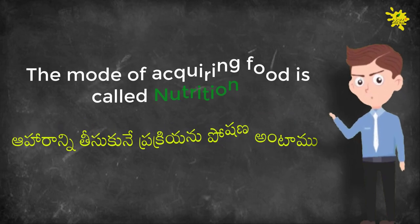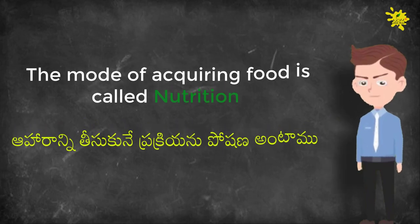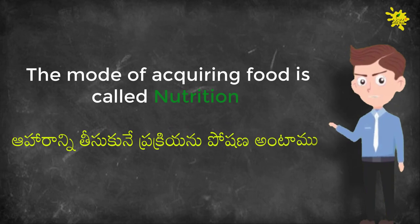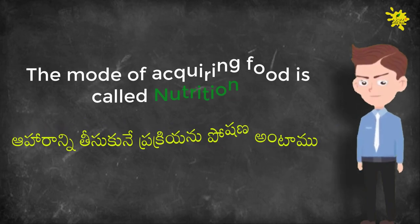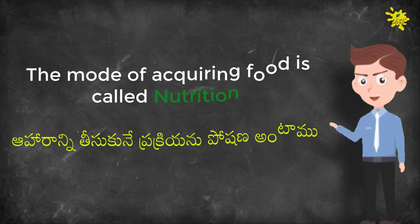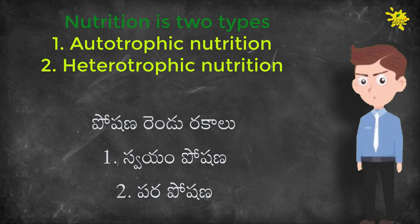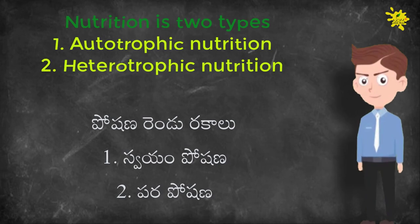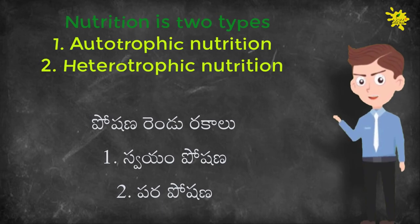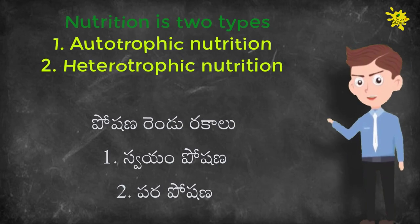The mode of acquiring food is called nutrition. Nutrition is of two types: the first is autotrophic nutrition and the second is heterotrophic nutrition.